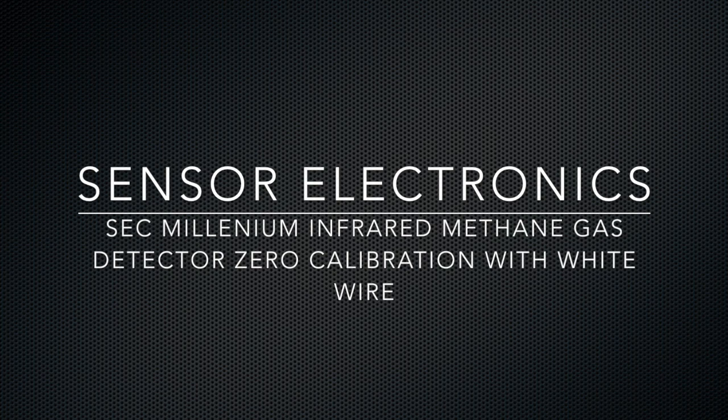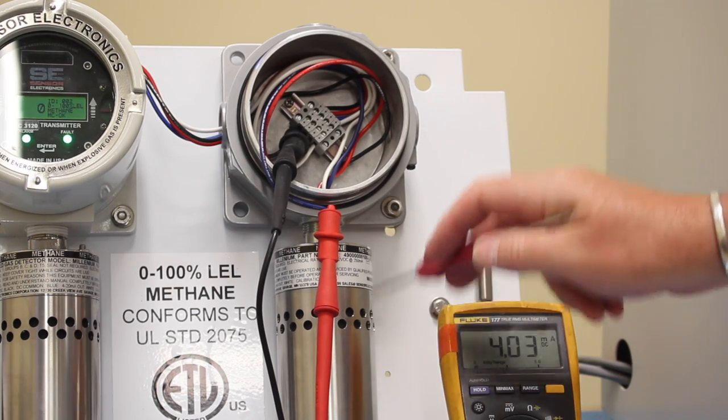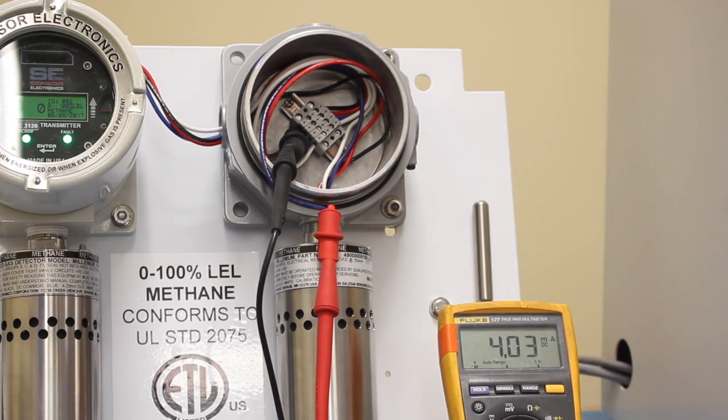How to calibrate the SEC Millennium Sensor to what we call a hard zero. The Millennium Sensor is a standalone sensor that can be used without a transmitter and provides a 4 to 20 milliamp signal into a PLC or some type of control panel.